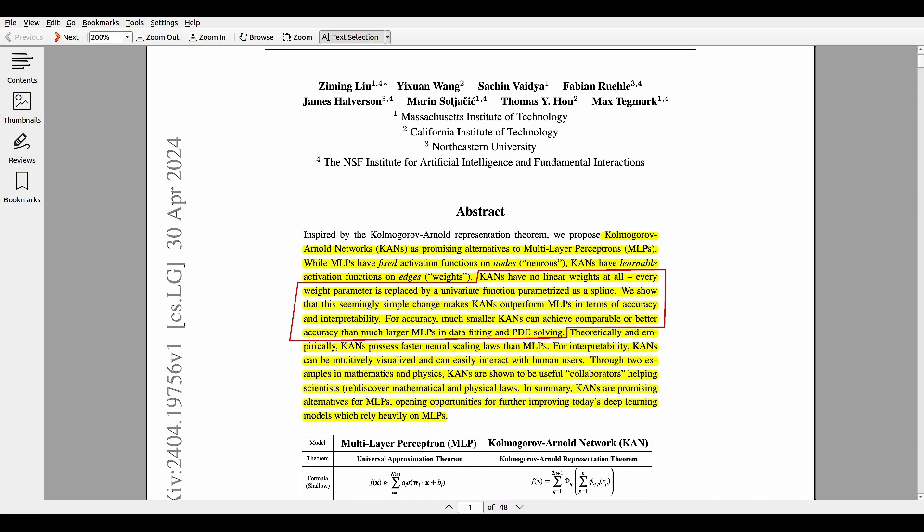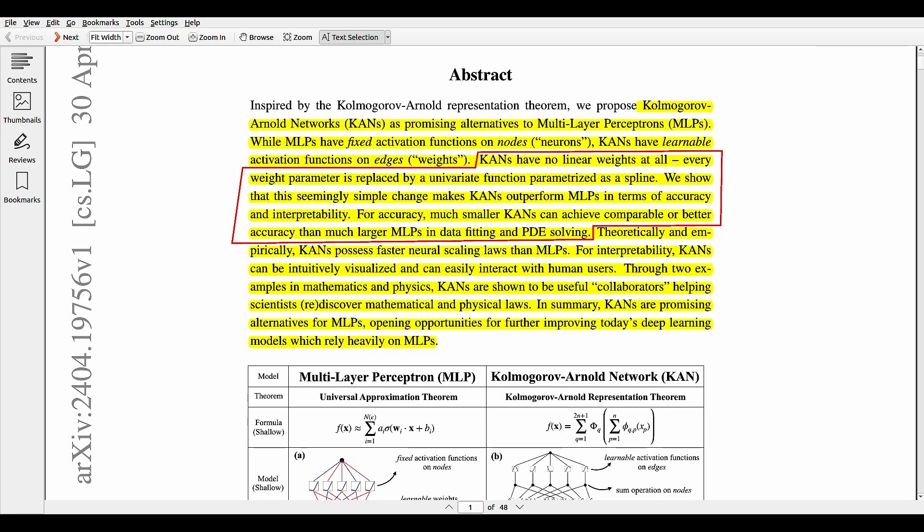This new paper Kolmogorov-Arnold Networks, or KAN in short, is coming as a promising alternative to multi-layer perceptrons, or MLPs, for approximating non-linear functions. Now we all know that for decades MLPs have actually ruled the world of neural networks, but this is almost kind of the first time a technique is being proposed which can dethrone MLP from its position.